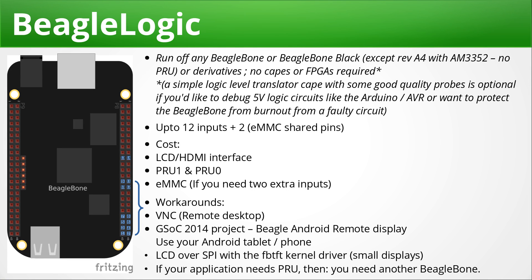Now we come to the main features of BeagleLogic. The first is that it will run off pretty much any AM335X system-on-chip which has the programmable real-time units. This includes the BeagleBone, the BeagleBone Black and its derivatives. There is absolutely no requirement of any CAPE or FPGA. A simple logic level translator CAPE would be a good idea if you want to debug external circuits that may not have 3.3V logic levels, providing an extra layer of protection. BeagleLogic would support up to 14 inputs: 12 via the LCD/HDMI interface pins remapped to the PRU, and two pins shared by the onboard eMMC — disable it and you get all 14 inputs.